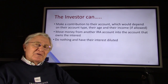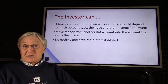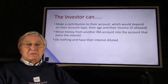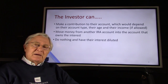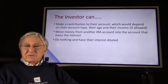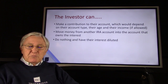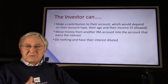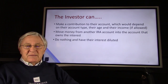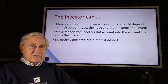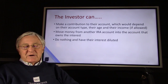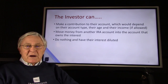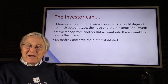Maybe they've made all the contributions that they can make and there's no possibility of putting more money into the account than is allowed — that in itself would be a prohibited transaction. So they could move money from another IRA account into the account that has the ownership, and then that account can make the capital call. That's all right, because it's still IRA money, and IRA money can move from one IRA account to another.